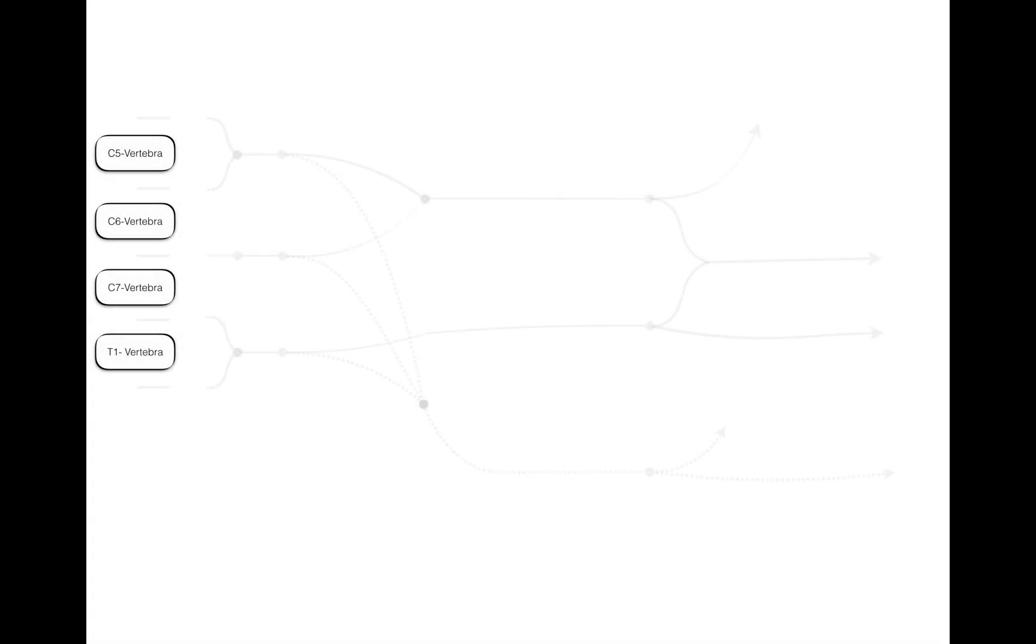Everyone describes the brachial plexus using the same series of named structures: roots, trunks, divisions, cords, and branches. This shouldn't be too bad considering like that of a tree, roots give rise to a trunk and a trunk divides.